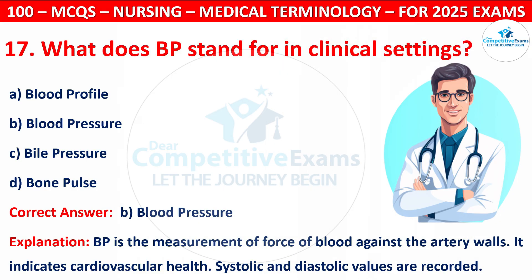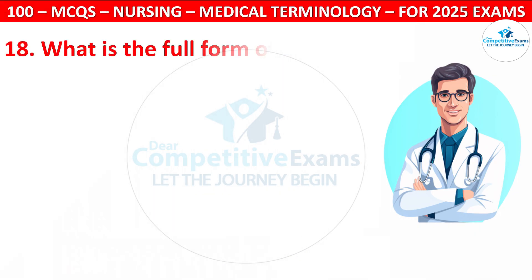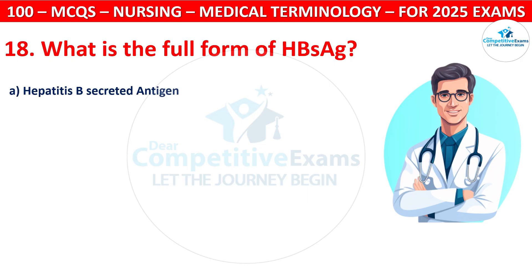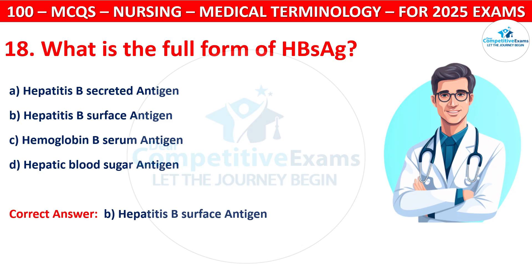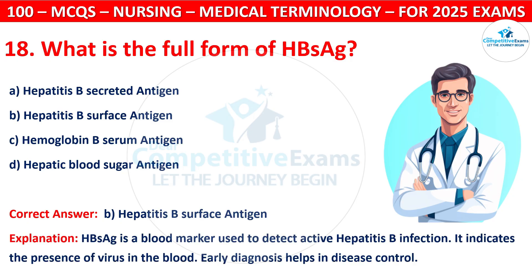Question 18: What is the full form of HBsAg? Options are: Hepatitis B Secreted Antigen, Hepatitis B Surface Antigen, Hemoglobin B Serum Antigen, or Hepatic Blood Sugar Antigen. The correct answer is B, that is Hepatitis B Surface Antigen. HBsAg is a blood marker used to detect active Hepatitis B infection. It indicates the presence of the virus in the blood. Early diagnosis helps in disease control.